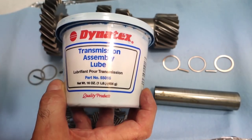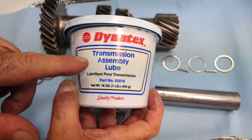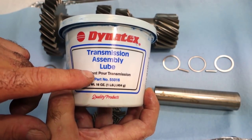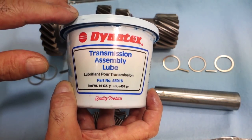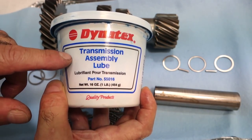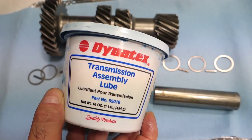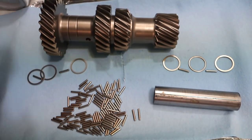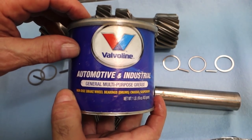I use this assembly lube here from a company called Dyna Tex, transmission assembly lube. This is the blue version, it's not as tacky as the red version. What's good about this stuff is it breaks down with oil. You never want to use white lithium grease, that stuff doesn't break down with your lube. You can also use heavy duty wheel bearing grease.